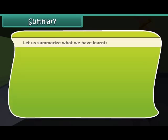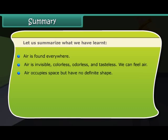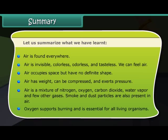Let us summarize what we have learned. Air is found everywhere. Air is invisible, colorless, odorless, and tasteless. We can feel air. Air occupies space but has no definite shape. Air has weight, can be compressed, and exerts pressure. Air is a mixture of nitrogen, oxygen, carbon dioxide, water vapor, and a few other gases. Smoke and dust particles are also present in air. Oxygen supports burning and is essential for all living organisms.